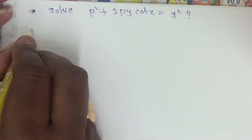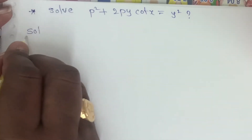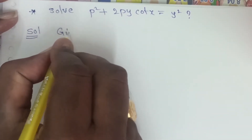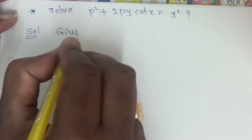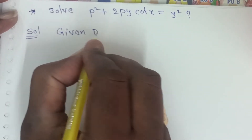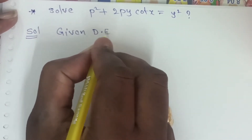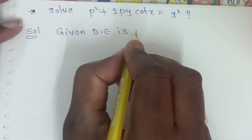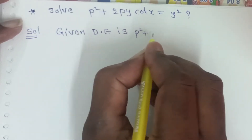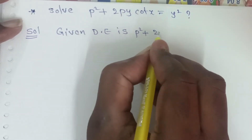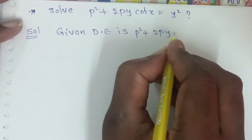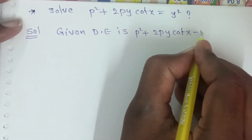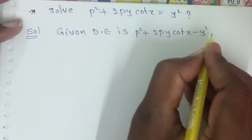So the problem is: given the differential equation P² + 2Py·cotX - y² = 0.